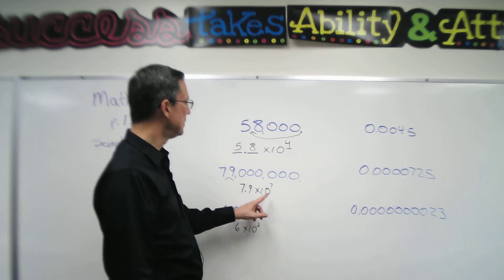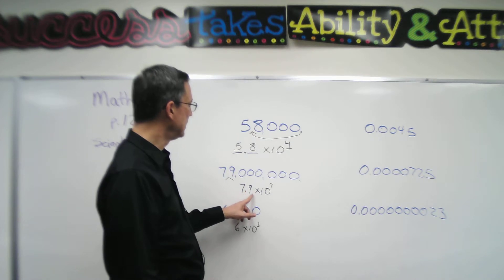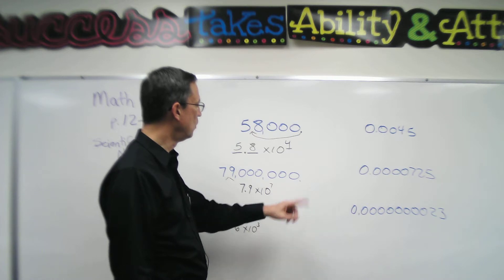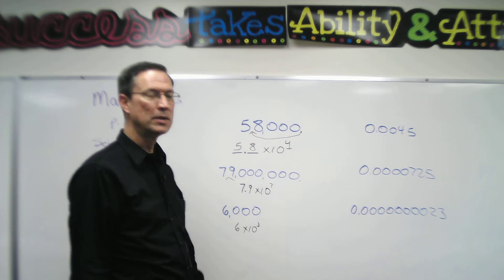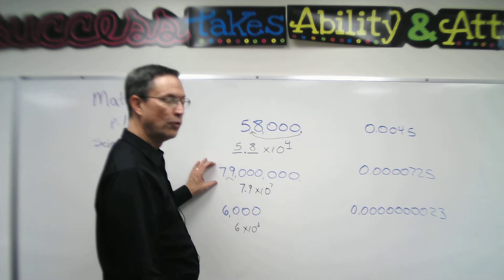If I started with 7.9 times 10 to the seventh, then I would start here and move the decimal once to get it behind the nine, and then one, two, three, four, five, six more places for a total of seven places, and I would have this number. This is called standard form.